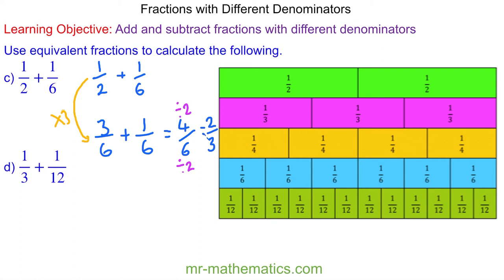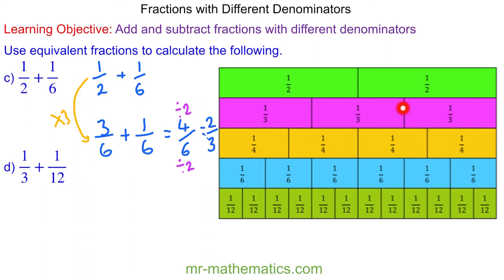We can check this works. We have one half add one more sixth, giving us four sixths in total, which is equivalent to two thirds.